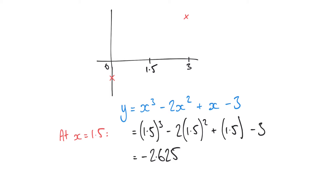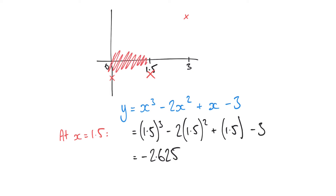Revisiting our sketch, we've evaluated the function at x equals 1.5 and found that it's still a negative number. So the place where the function crosses the x-axis is not between 0 and 1.5, because we're negative at both points. Where we cross the x-axis must be somewhere between 1.5 and 3. So we're going to disregard the section between 0 and 1.5 and bisect again between 1.5 and 3.